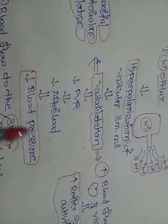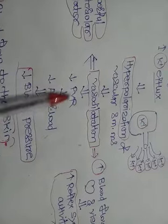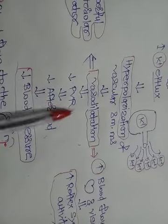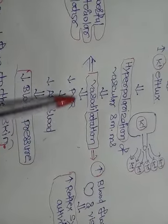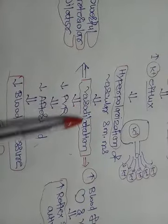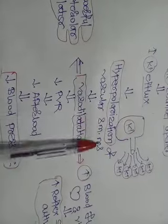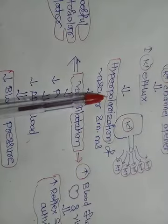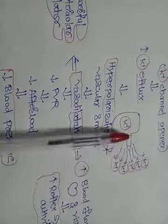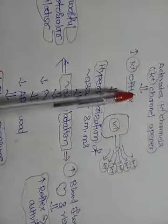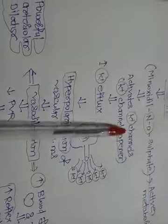Why is there a decrease in blood pressure? Because afterload is decreased. Why is afterload decreased? Because of decrease in total peripheral resistance or peripheral vascular resistance, and it is all because of vasodilatation. Why does vasodilatation occur? Because there is hyperpolarization of the vascular smooth muscle. Why does hyperpolarization occur? Because there is efflux of potassium ions from the vascular smooth muscles, activated by the Minoxidil-N-O-Sulphate, which is the active metabolite of Minoxidil.